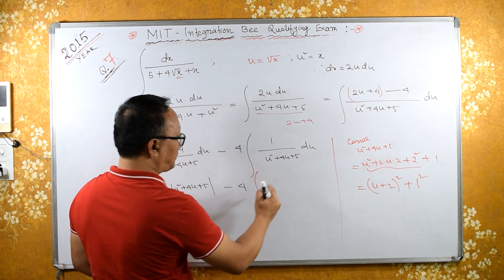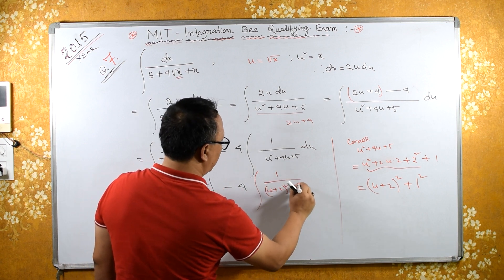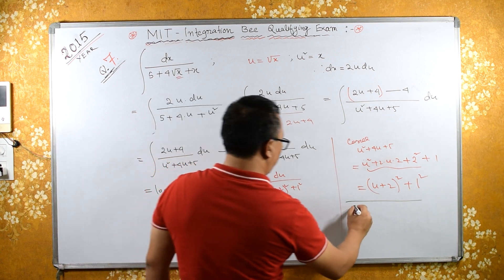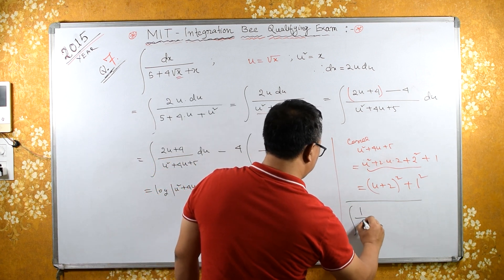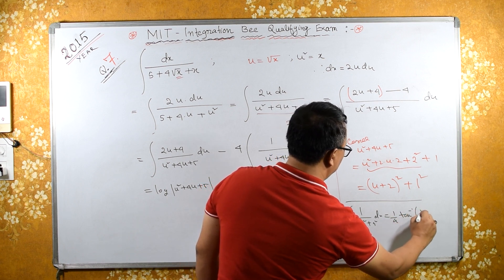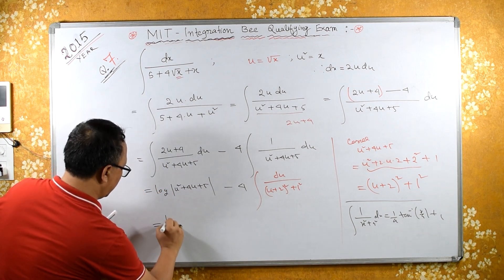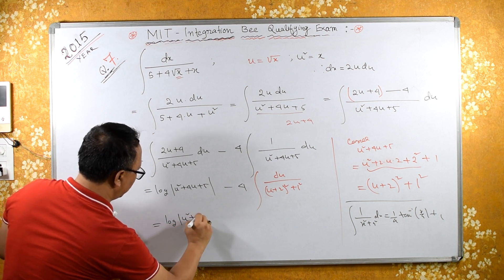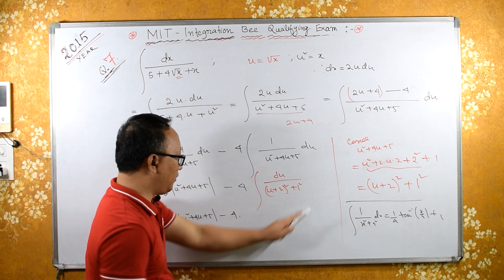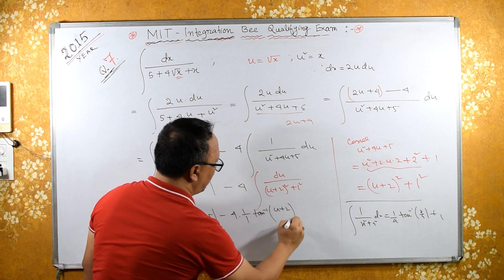So the second integral becomes 1 upon (u plus 2) squared plus 1 squared, du. Using the standard formula — integral of 1 upon (x squared plus a squared) dx equals (1/a) tan inverse (x/a) plus c — we get log of (u squared plus 4u plus 5) minus 4 times (1/1) tan inverse (u plus 2) upon 1.